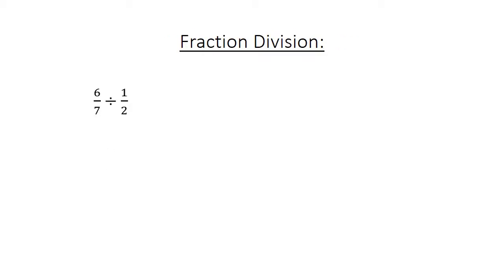Fraction division. 6 over 7 divided by 1 over 2 equals 6 over 7 times 2 over 1 equals 12 over 7 equals 1 and 5 over 7.